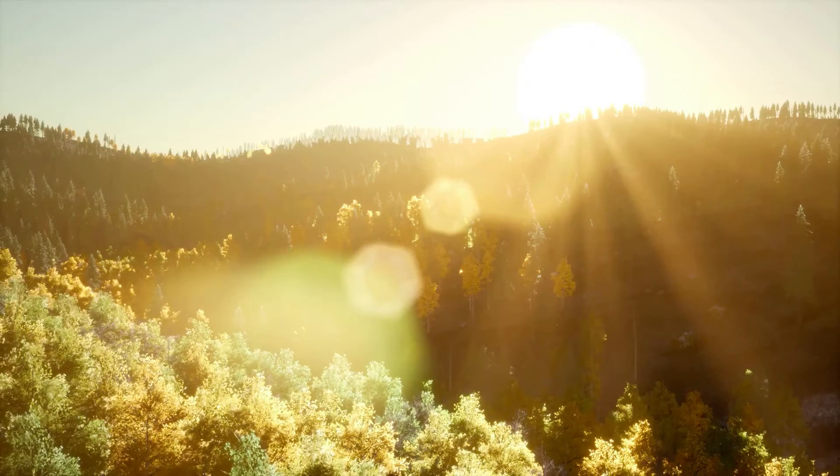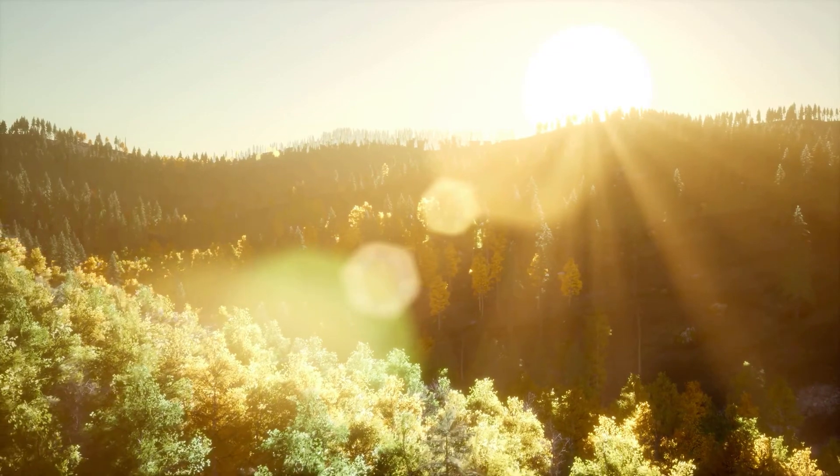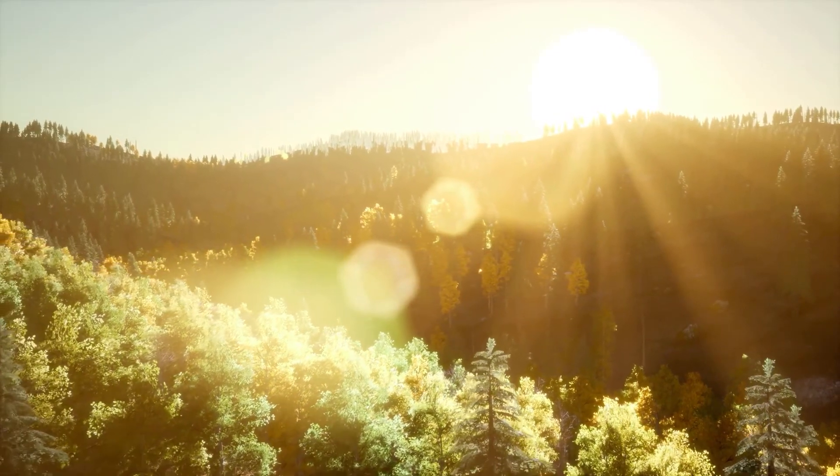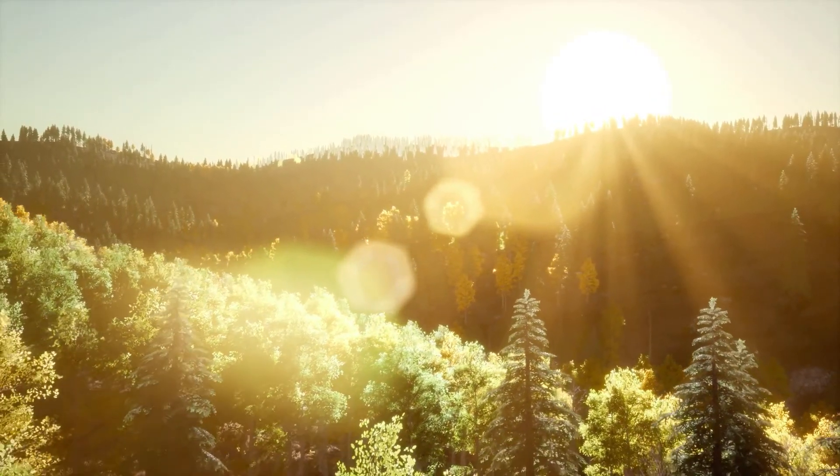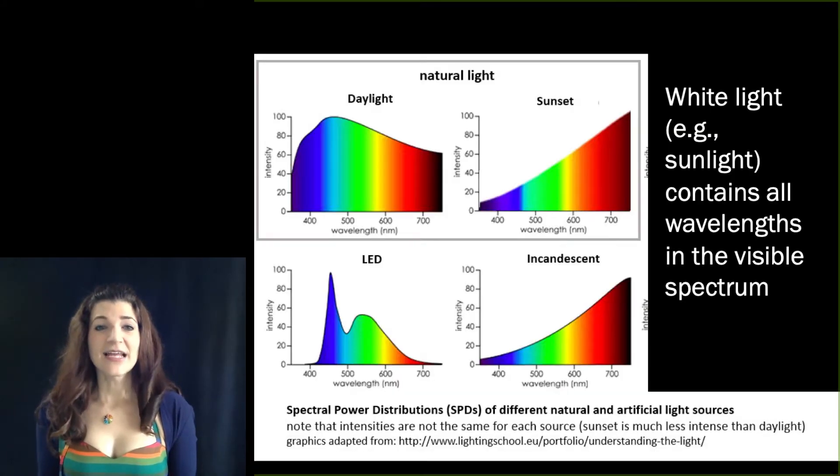For instance, sunlight doesn't appear to have one specific color. If anything, it looks clear or maybe kind of white. That's because sunlight is a mixture of wavelengths from across the visible spectrum.